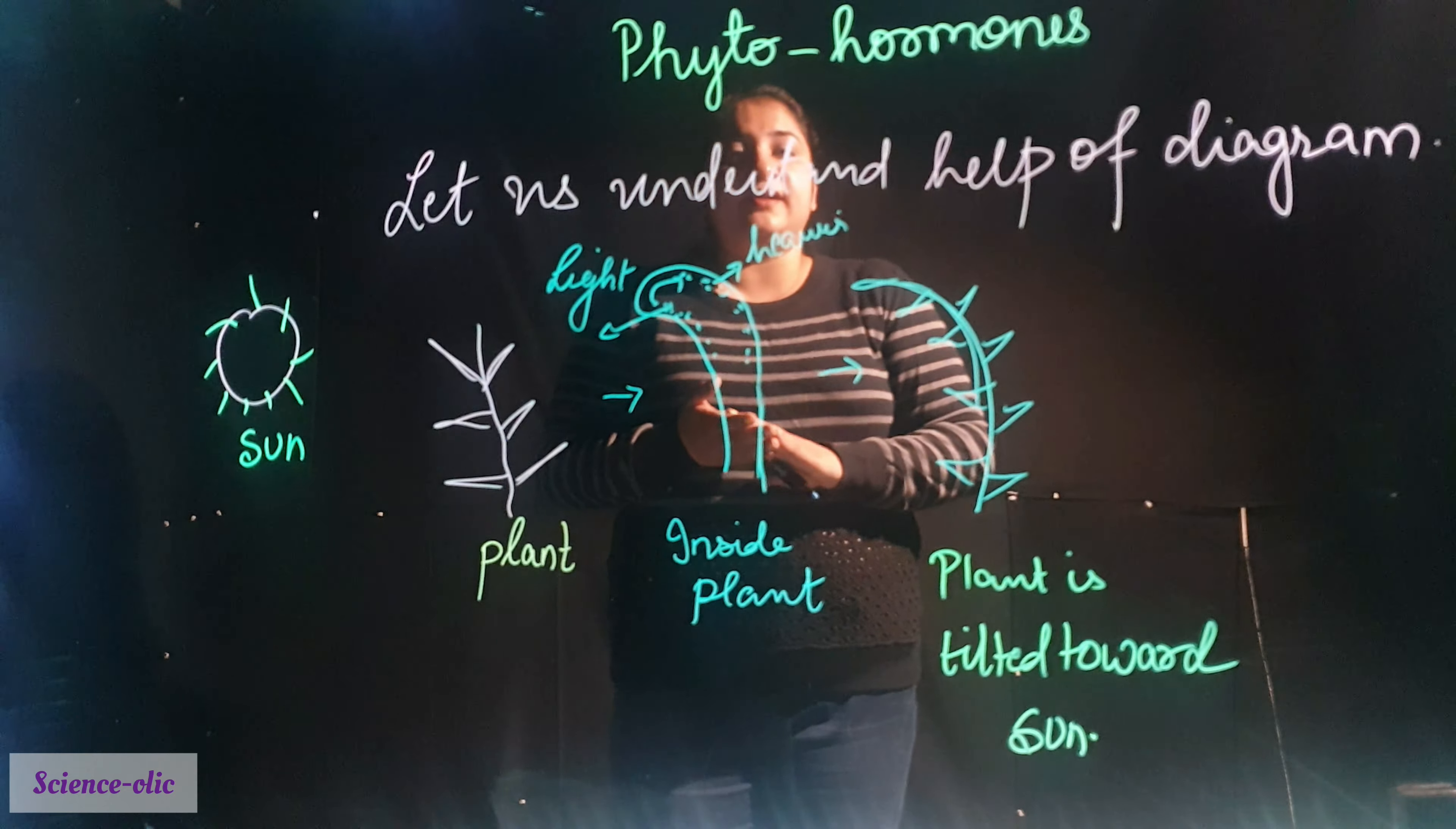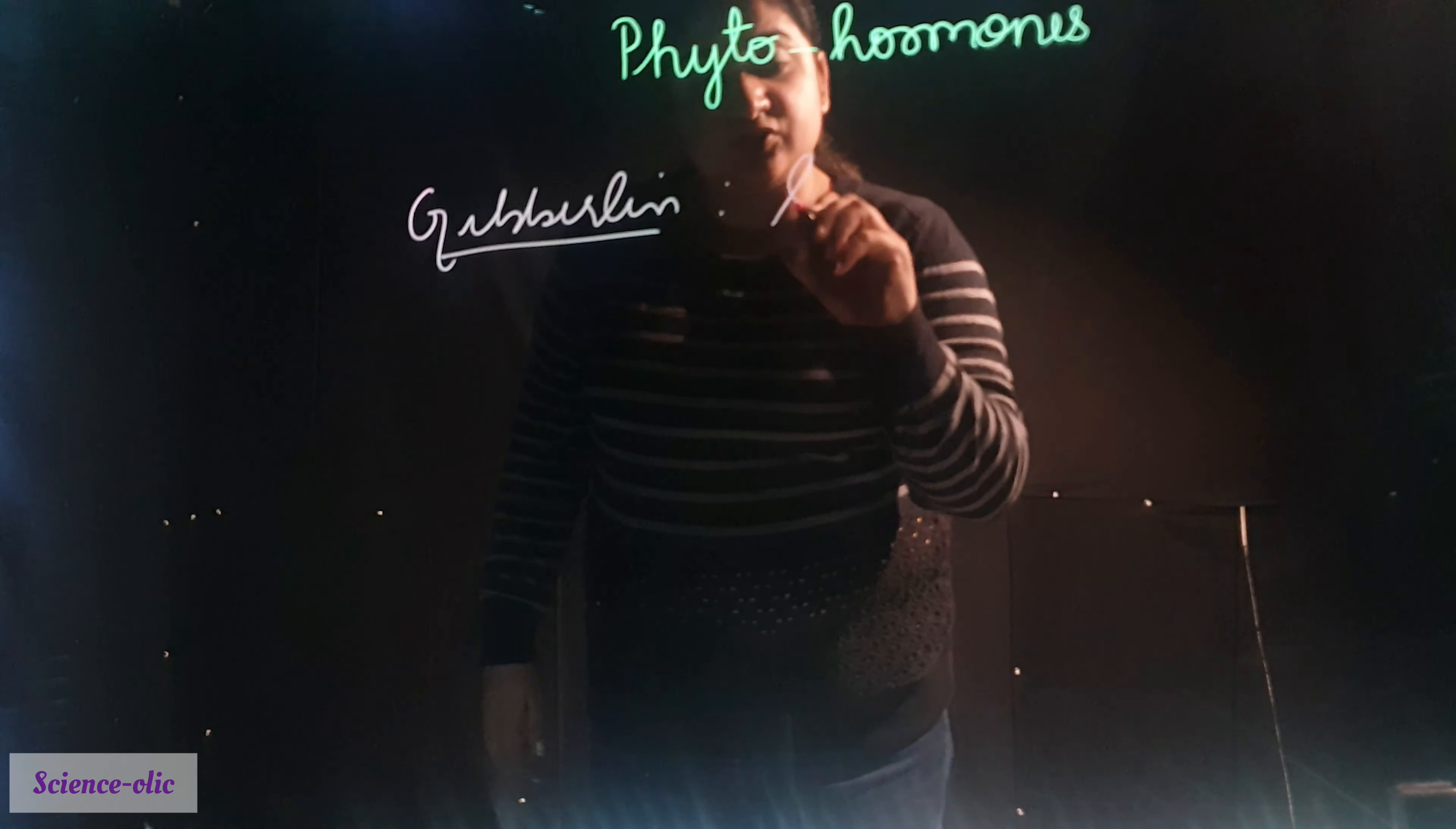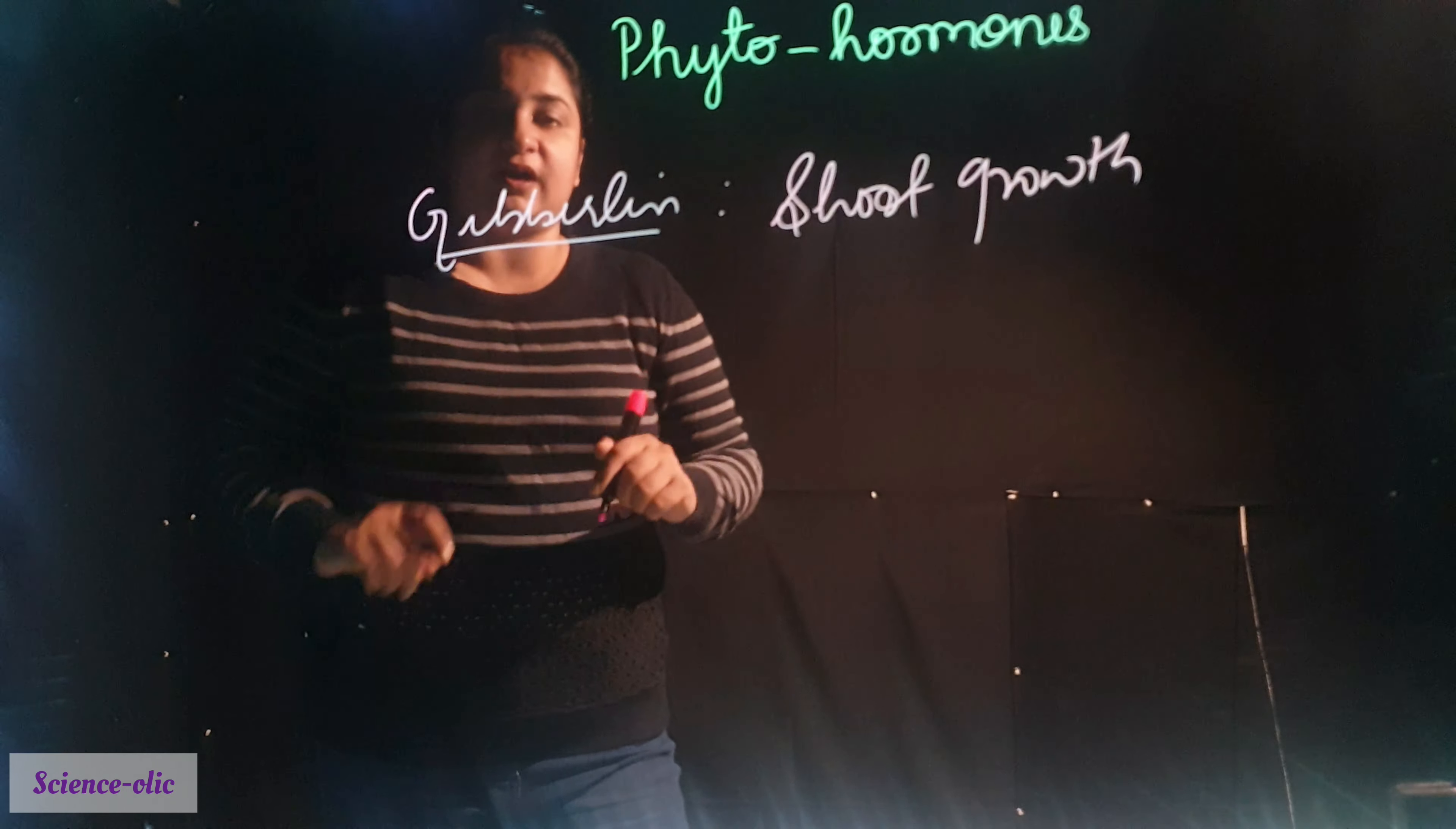The next we are studying is gibberellins. This is also a growth hormone. It helps in shoot growth. And auxins help in apical growth from the apex, and gibberellins help in shoot growth. And it is also a growth hormone.